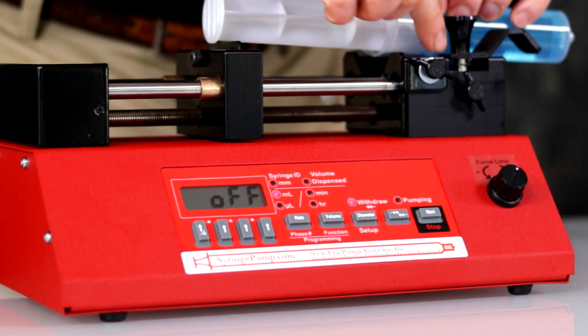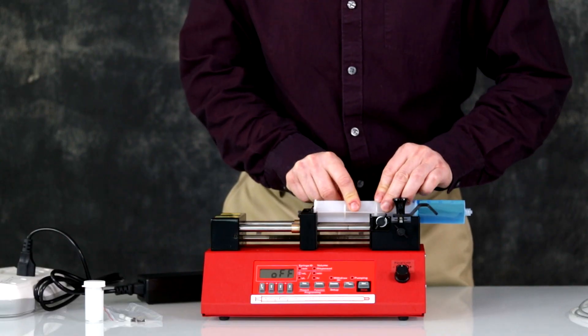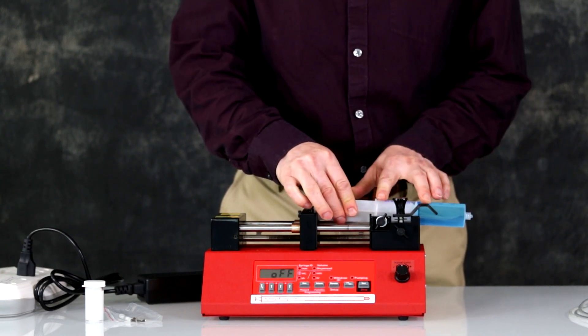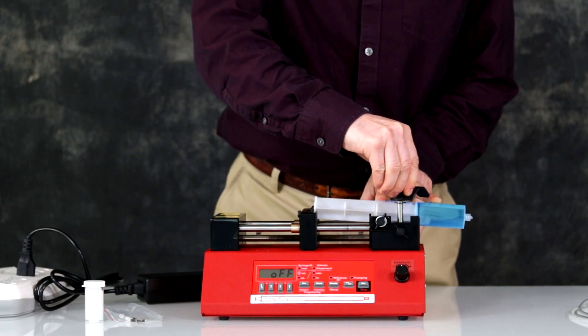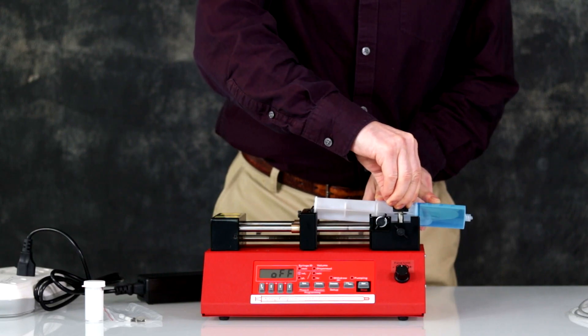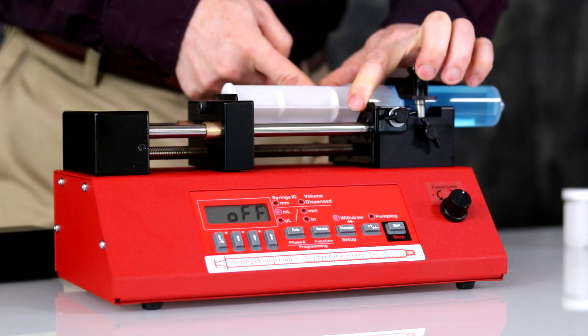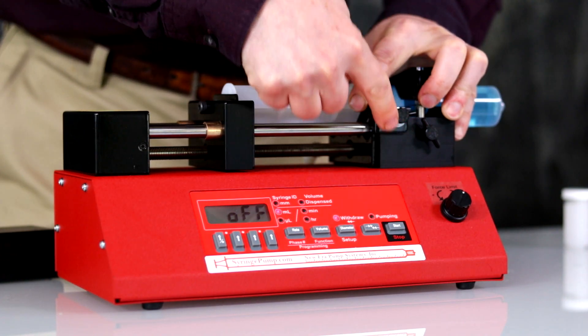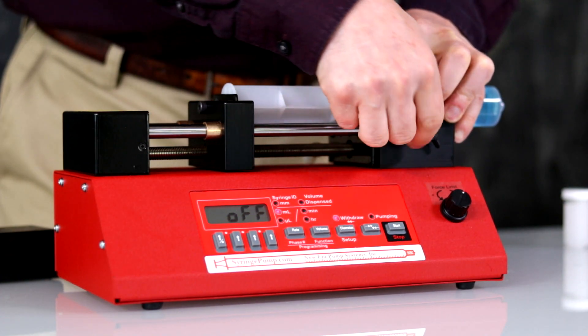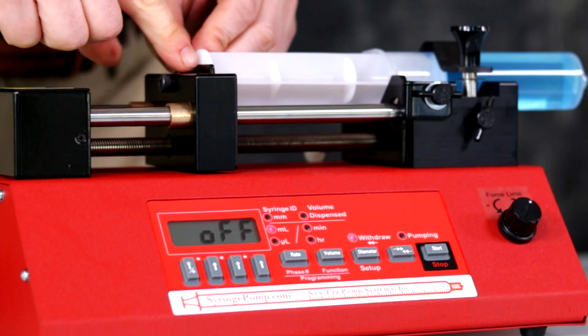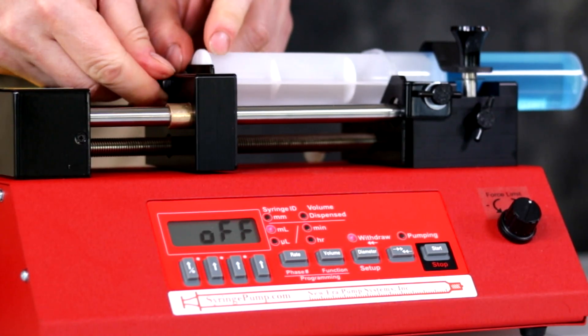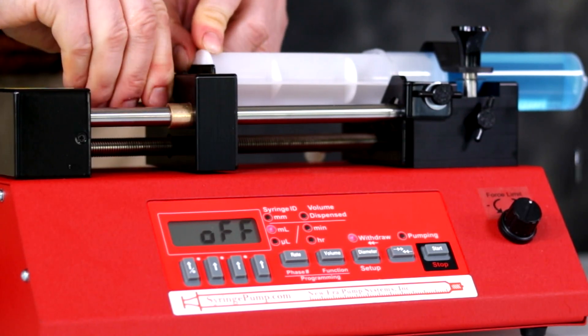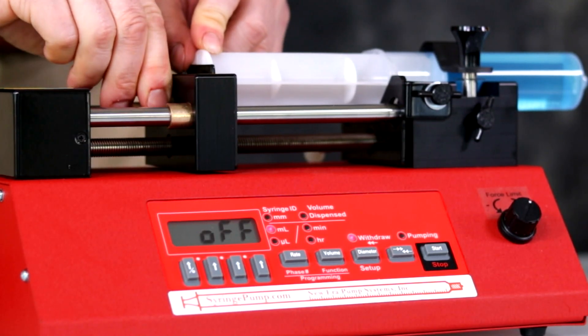Secure the syringe by moving the syringe clamp into place and tighten brackets by turning the two thumb screws. Make sure that the anti-siphon bracket is secure by turning the screw counterclockwise. Now the syringe is ready.